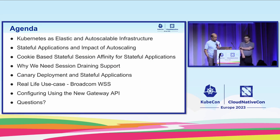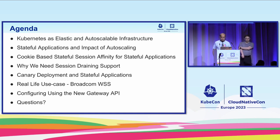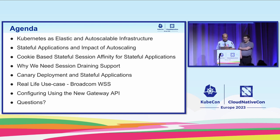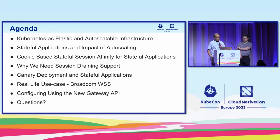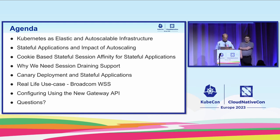We'll start off with a description of Kubernetes' elastic and auto-scalable infrastructure. I'll then talk about the problems faced by stateful applications in such an environment. We'll look at implementing a stateful session affinity, discuss a cookie-based approach implemented in the Proxyless gRPC library, and touch upon session draining and canary deployment. We'll then move on to a real-life use case from Broadcom, and Karsten will talk about the new Gateway API and implementation status. Hopefully we'll have a few minutes for Q&A.